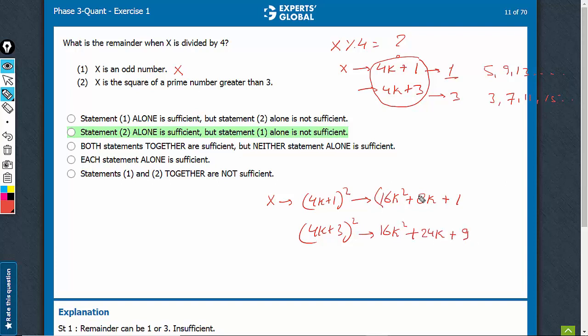So when we divide x by 4, whether this is the case or this is the case, we see that these two parts will be absolutely divided. The remainder is only in these numbers, 1 and 9.